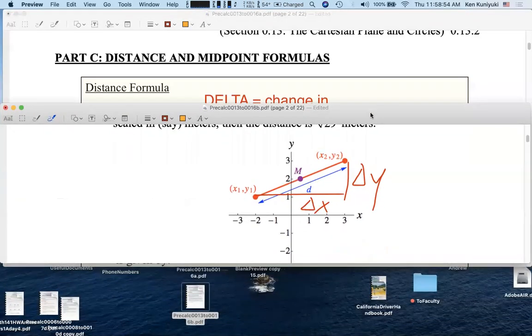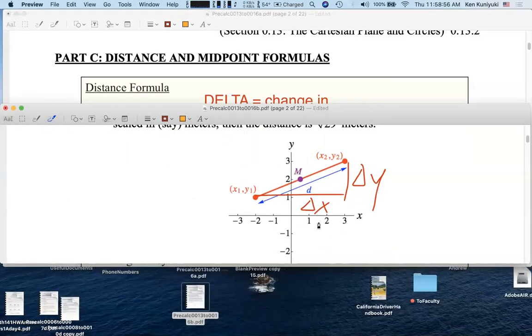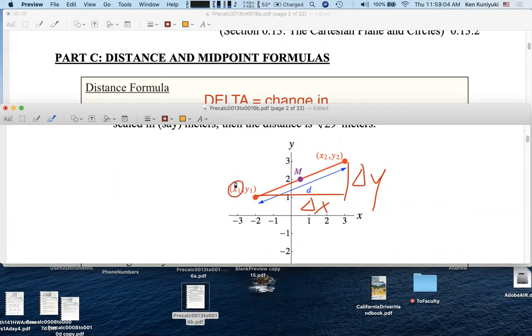How do we get the midpoint? To get the x-coordinate of the midpoint, we take the two x-coordinates of the endpoints and take their average. How do you take the average of two numbers? Add them up and divide by two.